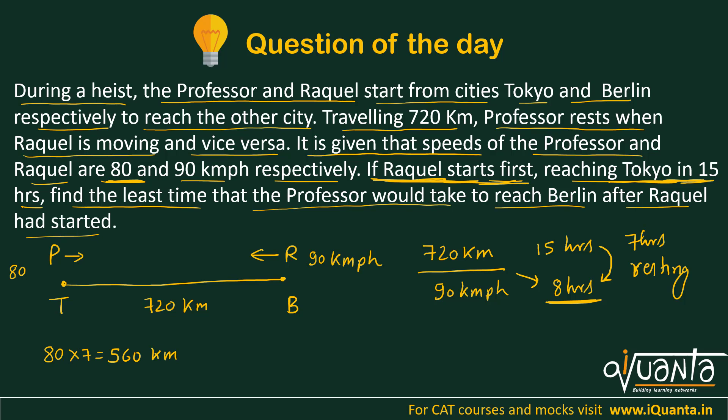Now the professor has to reach Berlin. So how much distance is left? 720 is the total distance, 560 is covered, so 160 kilometers remains.